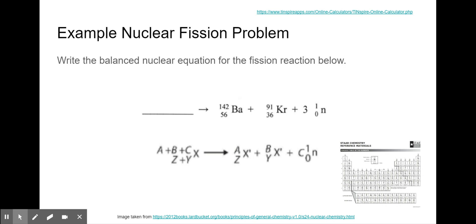So write the balanced nuclear equation for the fission reaction below. I'm going to do just like I did in the last screencast, where I have to make sure that the subatomic particles on the reactant side and the product side are equal. So I'm going to add up the nucleons or all of the neutrons and protons from the product side.